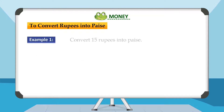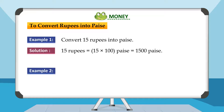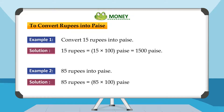Example 1: Convert 15 rupees into paise. Solution: 15 rupees equals 15 into 100 paise, which is equal to 1500 paise. Example 2: Convert 85 rupees into paise. Solution: 85 rupees is equal to 85 into 100 paise, which is equal to 8500 paise.